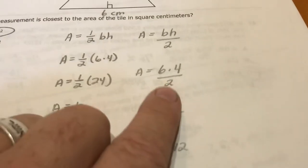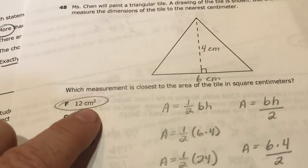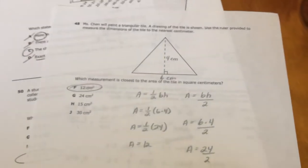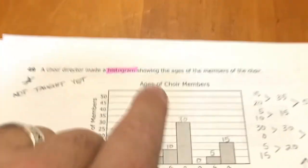So 12 centimeters squared is your area if you use the correct formula. 49 is a histogram, and I have not taught histograms yet, but you should still be able to answer this question.